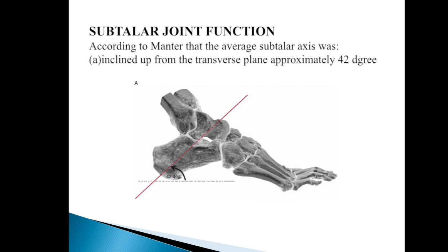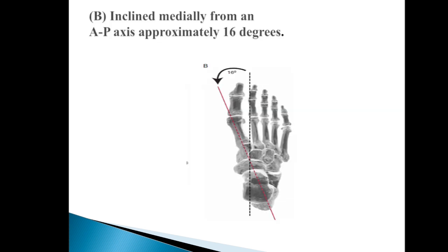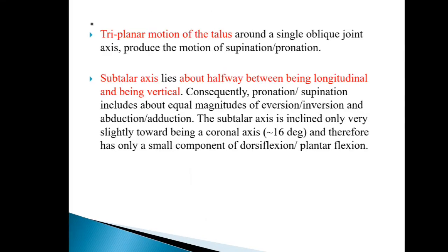The subtalar joint function is described according to its axis. The anterior subtalar axis is inclined upward from the transverse plane approximately 42 degrees, as seen in this figure. It is also inclined medially from an anterior-posterior axis approximately 16 degrees. The triplanar motion of the talus around a single oblique joint axis produces the motion of supination and pronation, and it lies halfway between longitudinal and vertical.